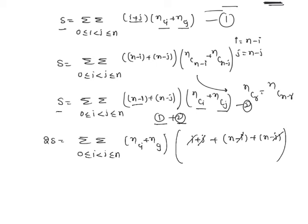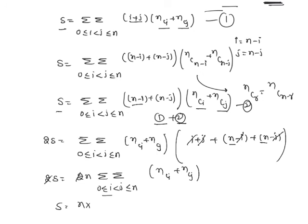After cancellation, i and j cancel out, leaving n+n = 2n. So 2S equals 2n times sigma sigma, 0 ≤ i < j ≤ n, of (nCi + nCj). The twos cancel, giving S = n times this summation. This summation was already solved in the last problem and equals n·2^n, so the final answer is S = n²·2^n.